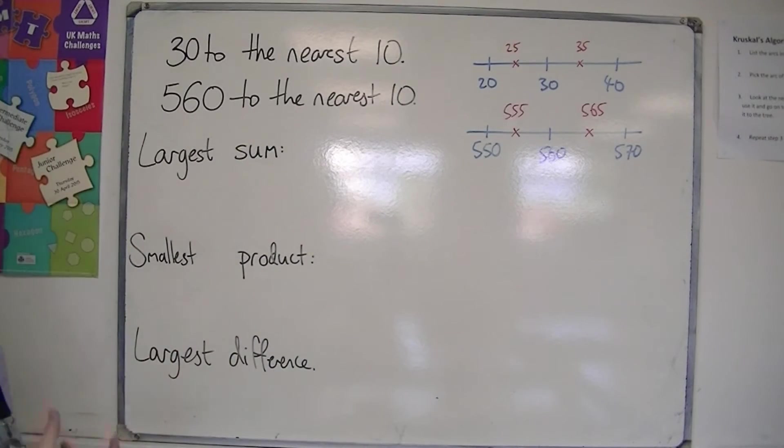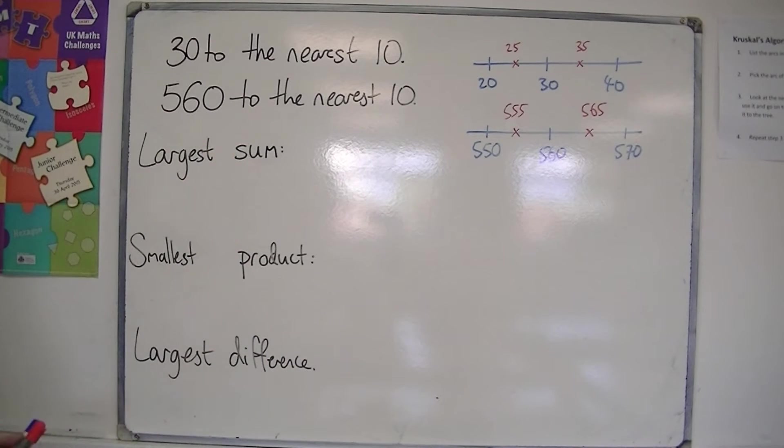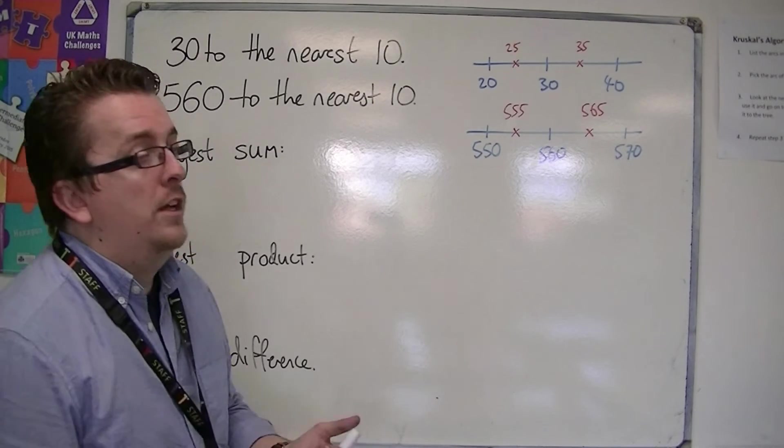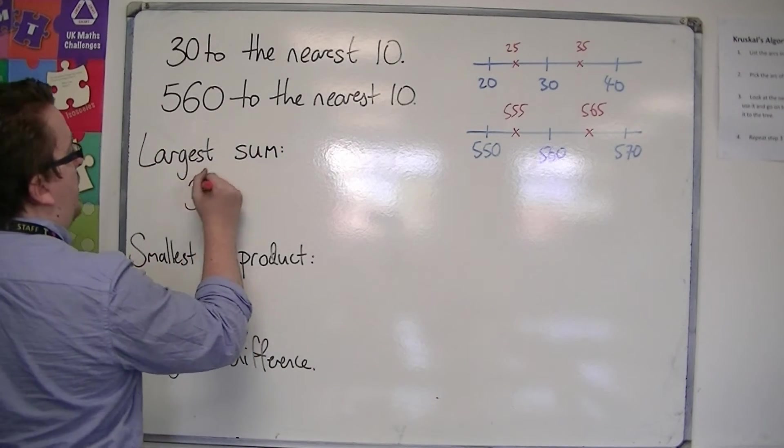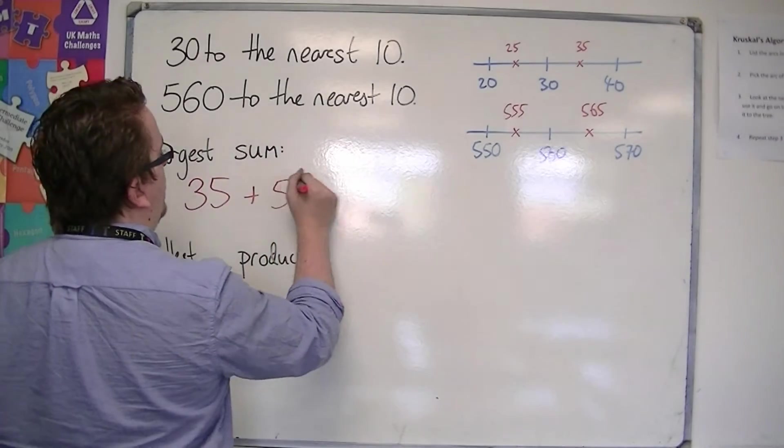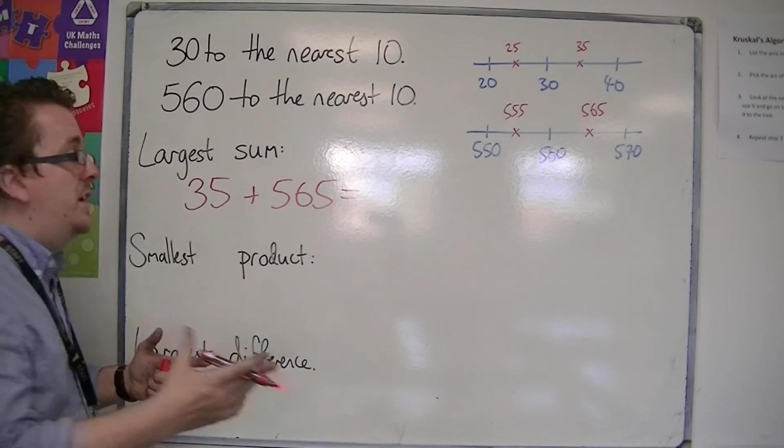So if you want to find the largest sum, the sum is adding them both together. So the largest possible sum would be adding the two largest possible ones together. And that would be 35 plus 565. So 35 plus 565 is 600.